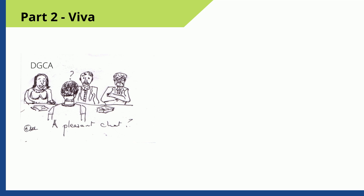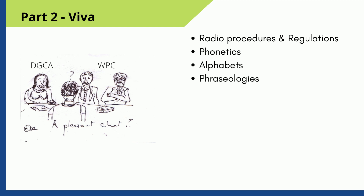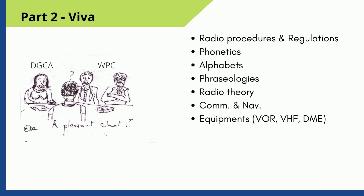Clearing Part 1 enables the candidate to appear for Part 2. Part 2 is a Viva based on regulations, procedure, and knowledge. There may be either 2 or 3 examiners, one of whom will be from DGCA and the others from WPC. The WPC examiner will ask questions related to radio procedures, regulations, phonetics, alphabets, and phraseologies, whereas the DGCA examiner may also ask questions from radio communications and navigation equipment and systems such as HF and VHF communications, VOR, ADF, DME, etc. The examiner shall not ask more than 3 to 4 questions, and the passing marks to clear Part 2 is also 50 marks.